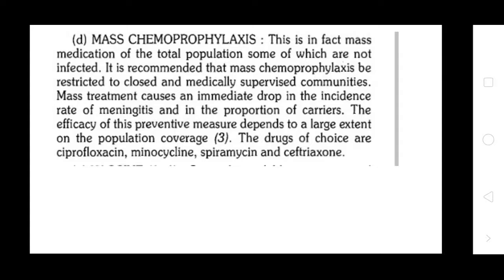Antibiotics effective for chemoprophylaxis include rifampicin, ciprofloxacin, ceftriaxone, or azithromycin. Mass chemoprophylaxis is administration of medication to a total population, some of whom are not infected. It is recommended that mass chemoprophylaxis be restricted to closely medically supervised communities. Mass treatment causes an immediate drop in the incidence rate of meningitis and the proportion of carriers. The drugs of choice are ciprofloxacin, amoxicillin, spectinomycin, and ceftriaxone.